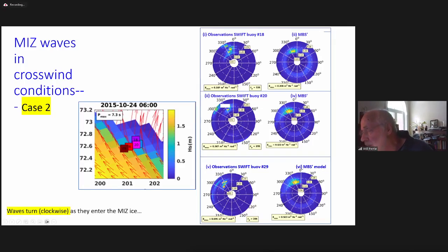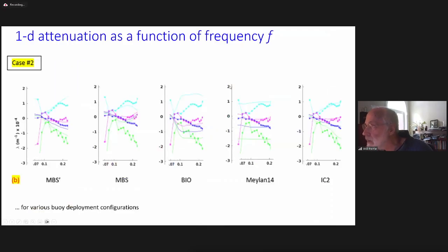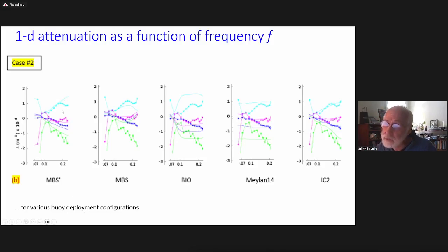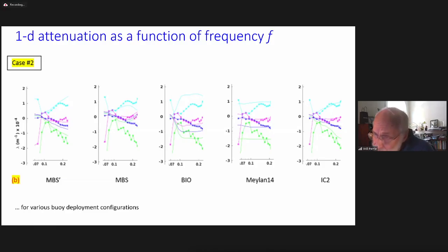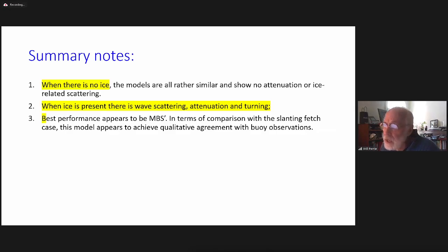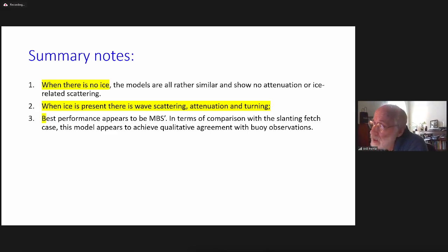If you look closely, you can see the turning effect: from the outermost buoy to the innermost buoy, the peak waves turn to the right. The attenuation for the different models at the storm peak, plotted for various buoy configurations, shows each track as a different buoy configuration against model output. Conclusions: when there's no ice, all models are the same — no attenuation. When ice is present, we can show scattering, attenuation, and turning, and it appears that MBS-prime gives the best result. Thank you.